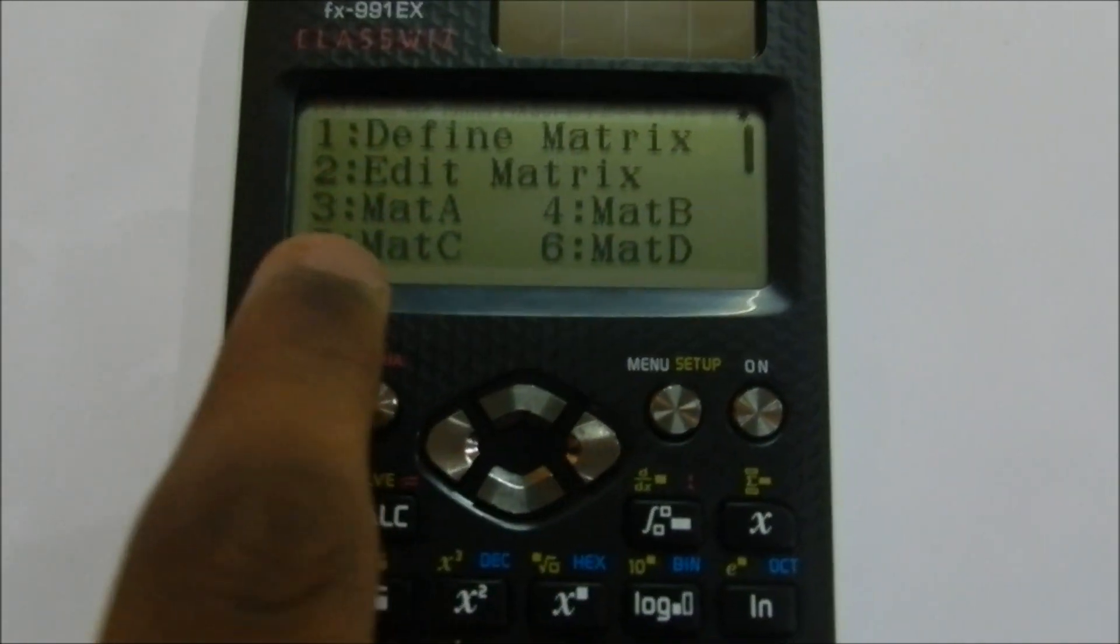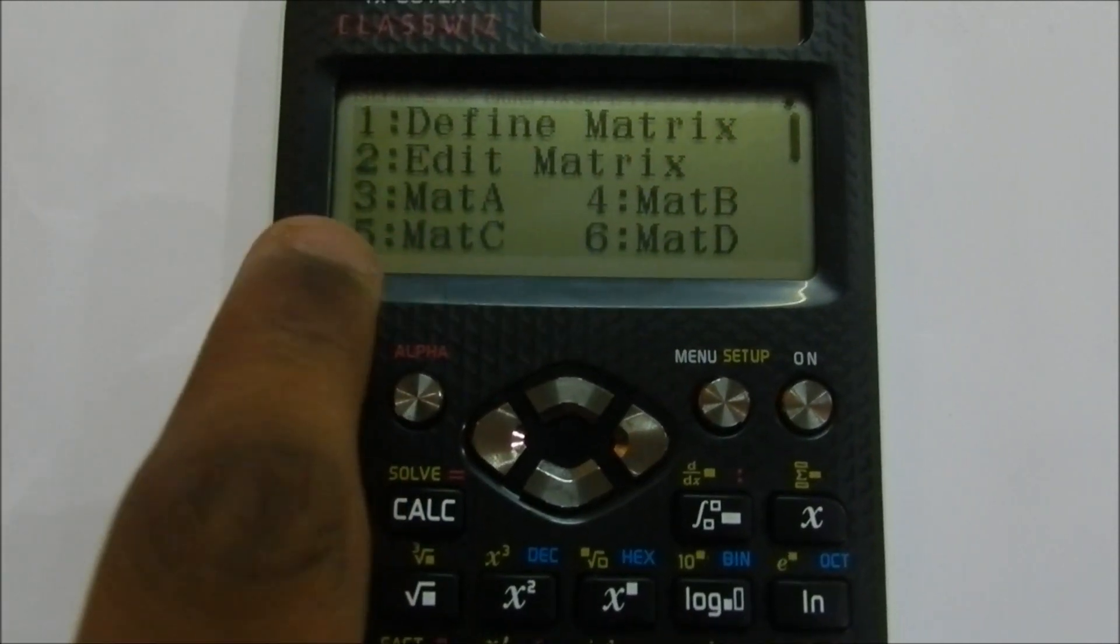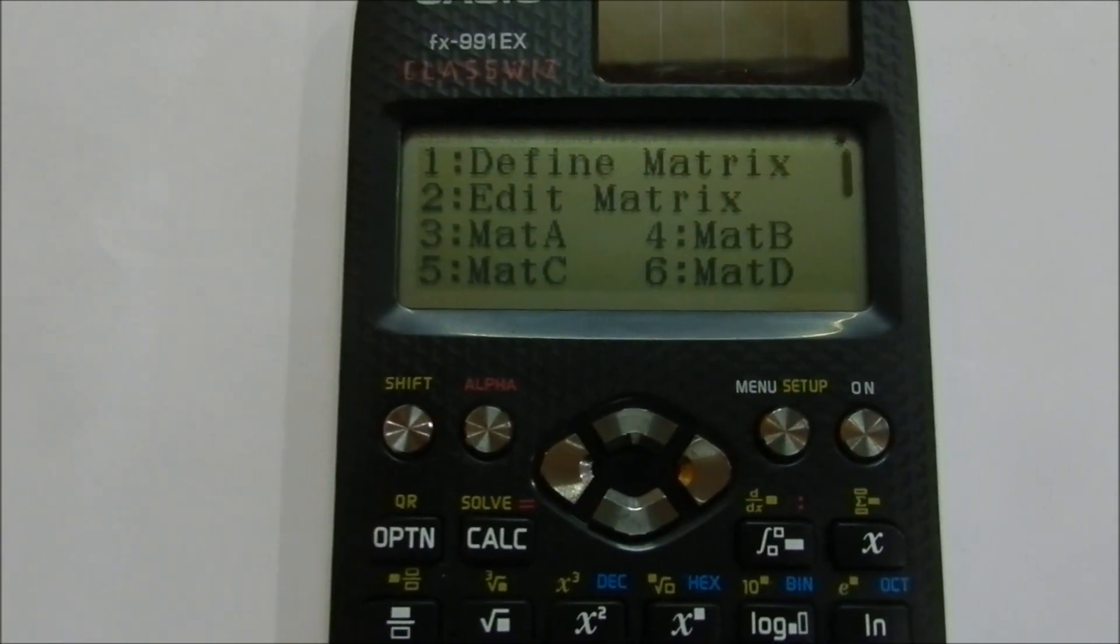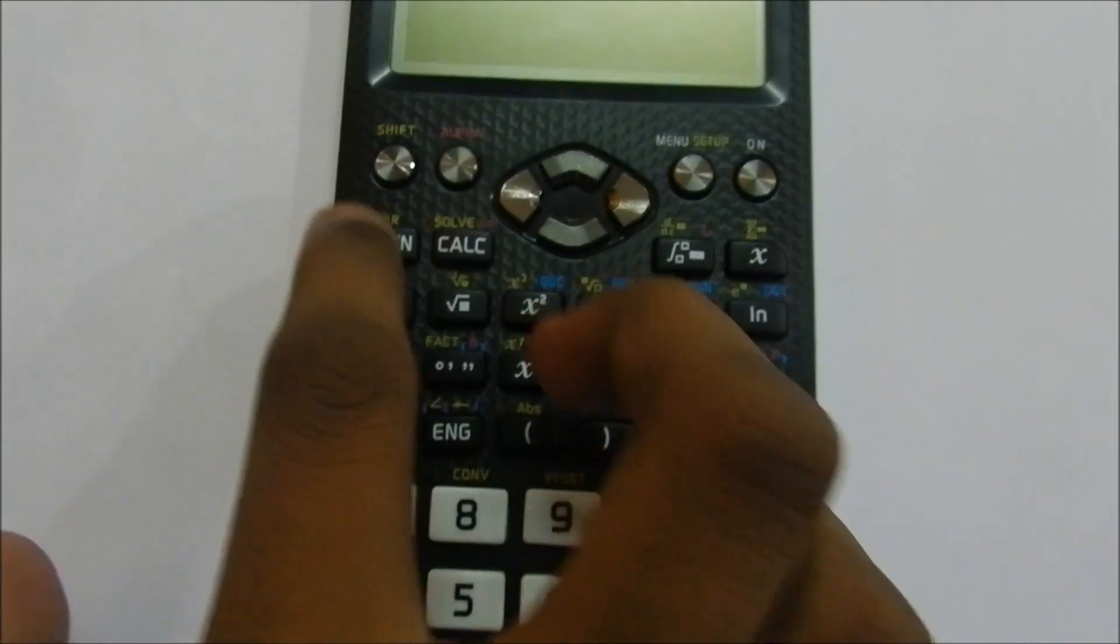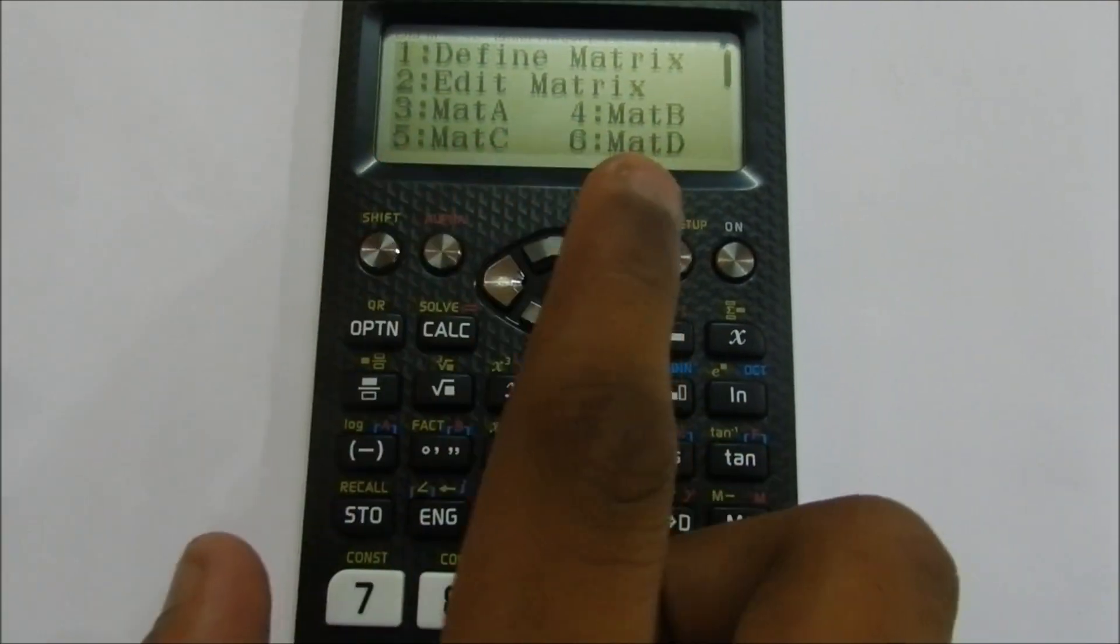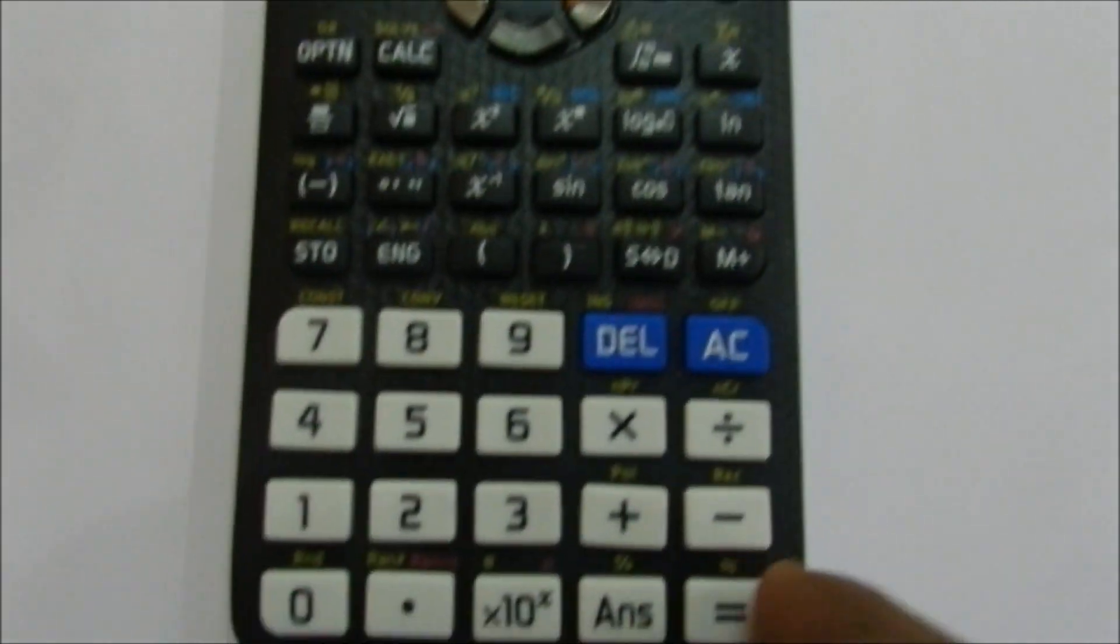Now, as we have already defined two matrices, select Matrix A, which is number 3. And now select the into symbol. Again, click Option. Take Matrix B, which is 4. And now click is equal to.